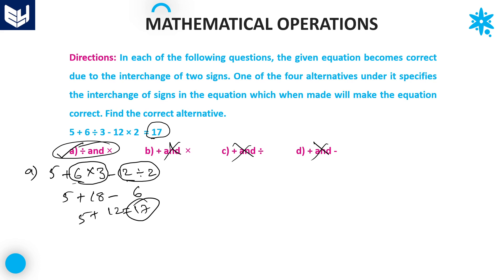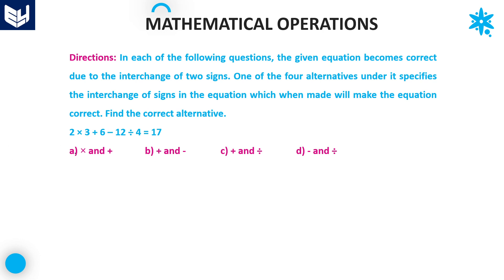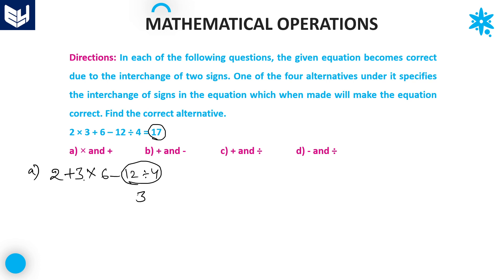Let's move on to the next question. The expression is given and the resultant answer should be 17. Let's check option A — multiplication and plus are interchanged. The equation becomes: 2 + 6 × 12 ÷ 4 - 3. First priority is division: 12 ÷ 4 = 3. Next priority multiplication: 3 × 6 = 18. Then: 2 + 18 - 3 = 17. We got the same result.